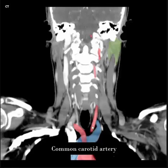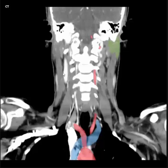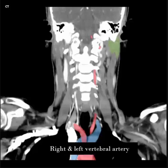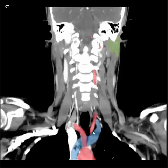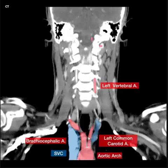Common carotid artery, brachiocephalic artery, parotid gland, sternocleidomastoid muscle right and left. Right and left vertebral artery, common carotid artery, right and left vertebral artery, brachiocephalic artery, left common carotid artery. Aortic artery, aortic arch, superior vena cava.